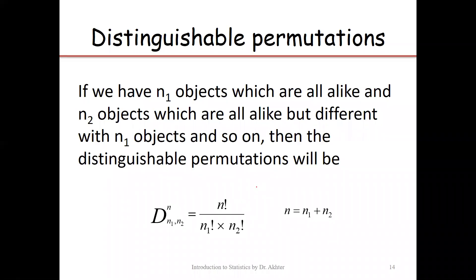Another formula for permutation is distinguishable permutation. It is used whenever we have n₁ objects that are alike in all respects, and another set of n₂ objects that are alike among themselves. One cannot distinguish objects within the same group, but one can distinguish between the two groups. The total number of distinguishable permutations is calculated using a special formula.